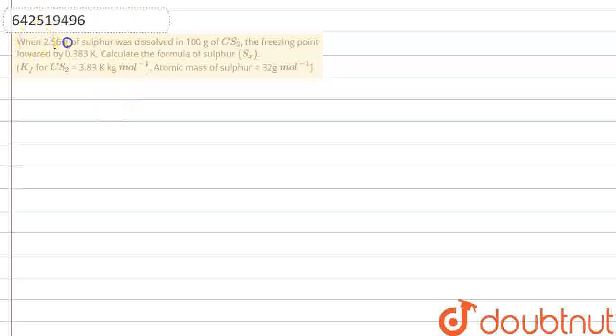Hello everyone, this is our question. Let me explain it to you. When 2.56 gram of sulfur was dissolved in 100 gram of carbon disulfide, the freezing point lowered by 0.383 Kelvin. Calculate the formula of sulfur Sx.